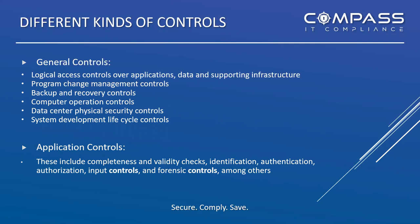Terminology matters: a policy is the do's and don'ts — the Bible of the business — with an owner and a task for each control statement. A program is much more robust: it's the policy, plus the procedures that roll up to that policy, plus education on that policy, plus ongoing monitoring. A program is cyclic and ongoing, whereas a policy is just one subset of a program.